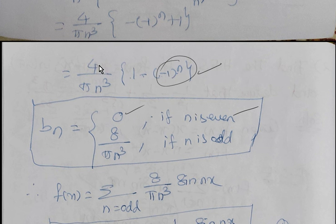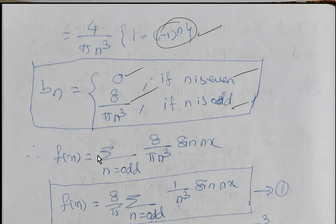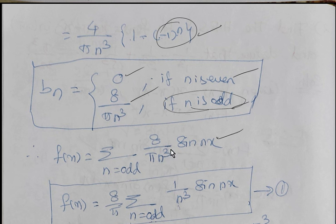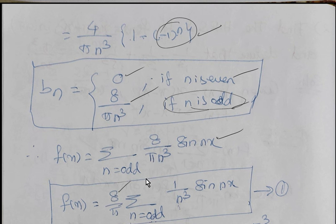So bn = (2/π)·[4/n³·(1 - (-1)^n)]. For even n, bn = 0. For odd n, bn = 8/(π·n³). Therefore f(x) = (8/π)·summation over odd n of (1/n³)·sin(nx).